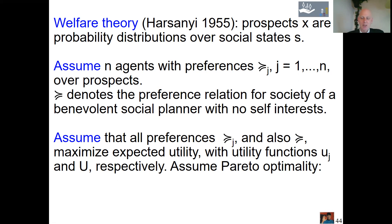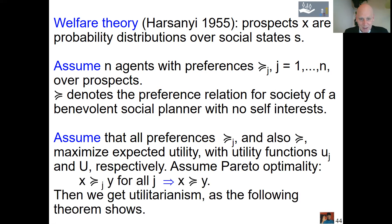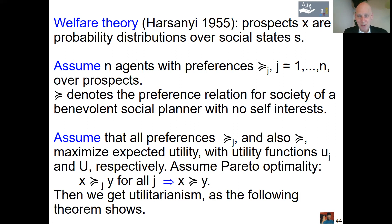We start with Pareto optimality — the most uncontroversial condition you can think of. It says: imagine social states x and y, and everybody in the country — all 17 million Dutch people — prefers x to y. This is not just a majority; it is unanimity. Then the social planner should prefer x to y. You probably cannot think of a less convincing objection — this is the most convincing and most innocuous condition imaginable. But then Harsanyi surprised the whole world.